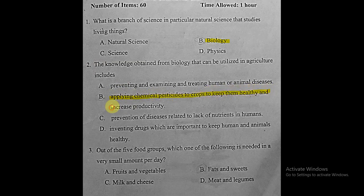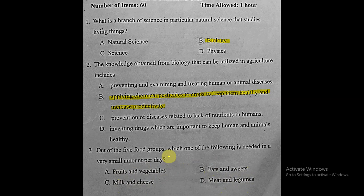Question three: out of the five food groups, which one is needed in a very small amount per day? We have fruits and vegetables, milk and cheese, meat and legumes, or fats and sweets. Of course fats and sweets are what we eat in small amounts per day. The correct answer is fats and sweets.